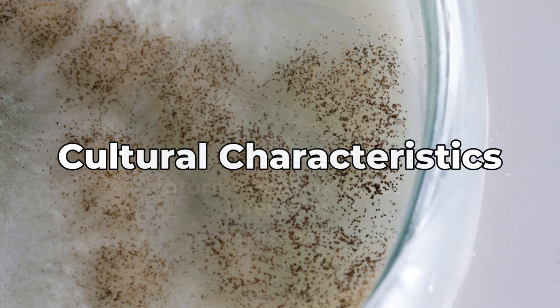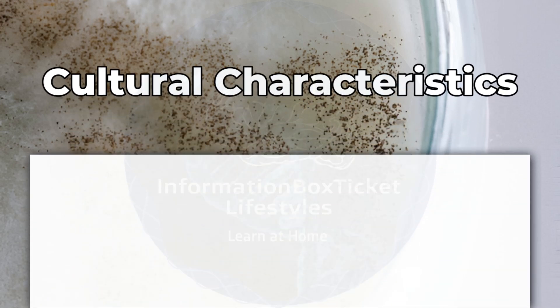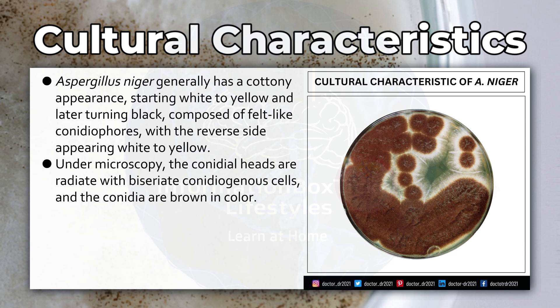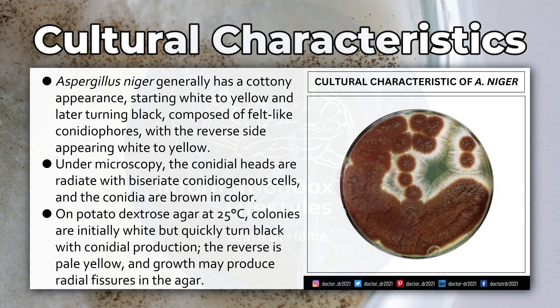Cultural Characteristics of Aspergillus niger. Aspergillus niger generally has a cottony appearance, starting white to yellow and later turning black, composed of felt-like conidiophores, with the reverse side appearing white to yellow. Under microscopy, the conidial heads are radiate with biseriate conidiogenous cells, and the conidia are brown in color. On potato dextrose agar at 25 degrees Celsius, colonies are initially white but quickly turn black with conidial production; the reverse is pale yellow, and growth may produce radial fissures in the agar.